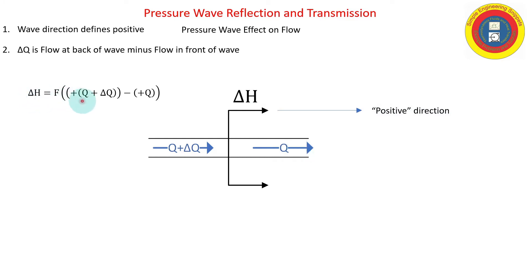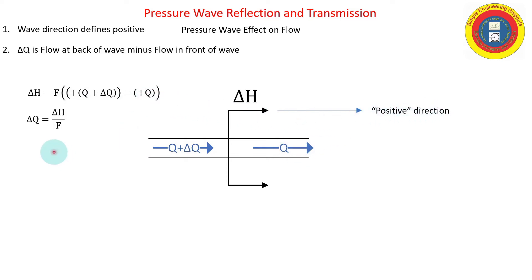Let's work an example. We have a pressure wave delta-h going with the flow, and positive is defined in the same direction as the wave. Writing Joukowski's equation: the flow behind the wave is flowing in the same direction as the wave (positive sign) minus the flow in front of the wave, also in the positive direction.